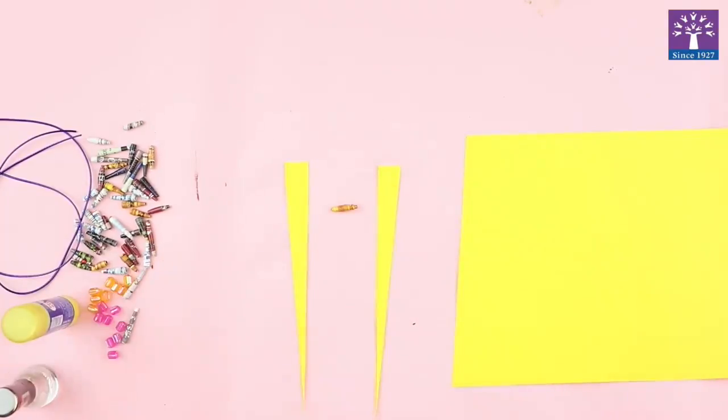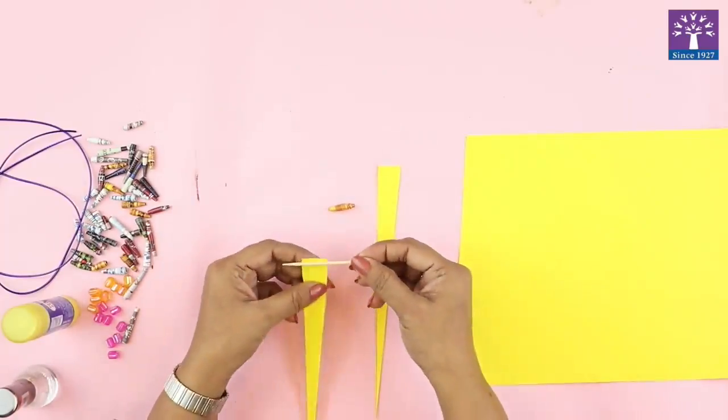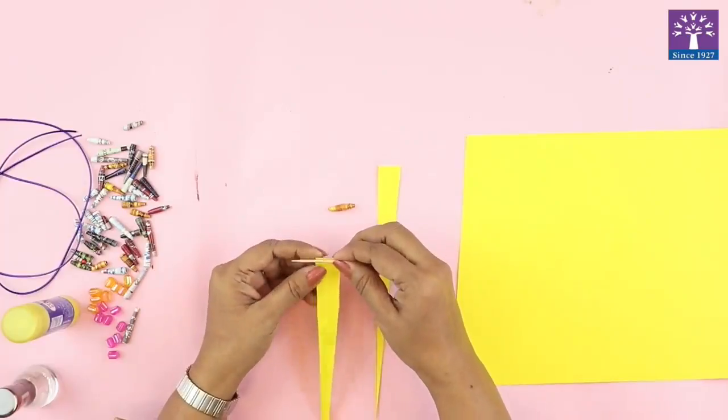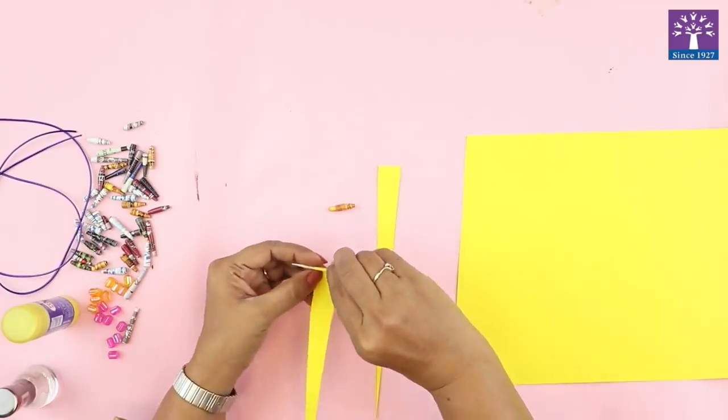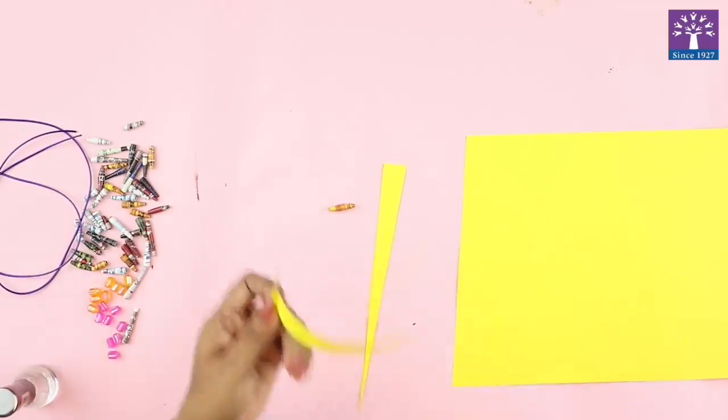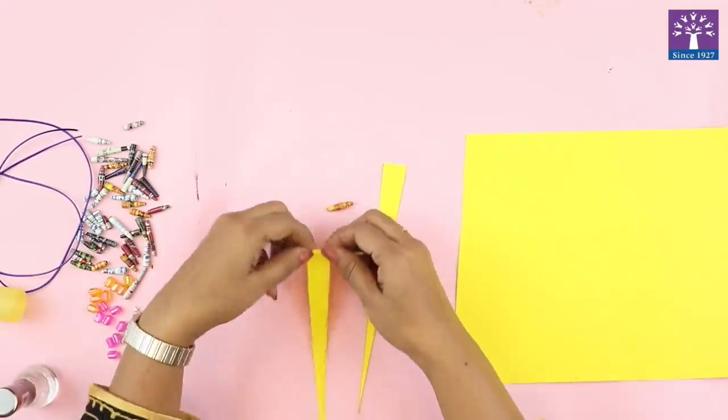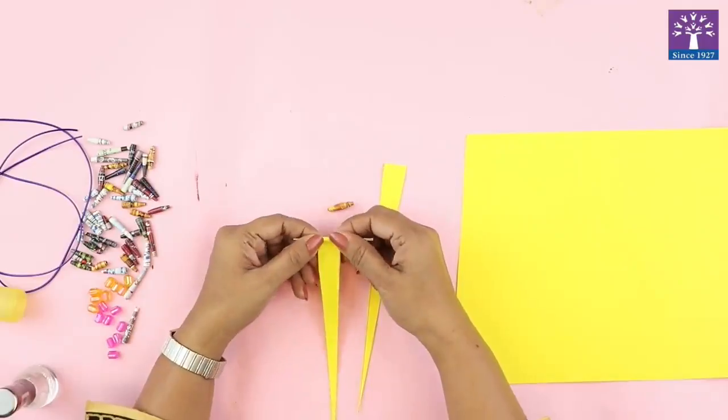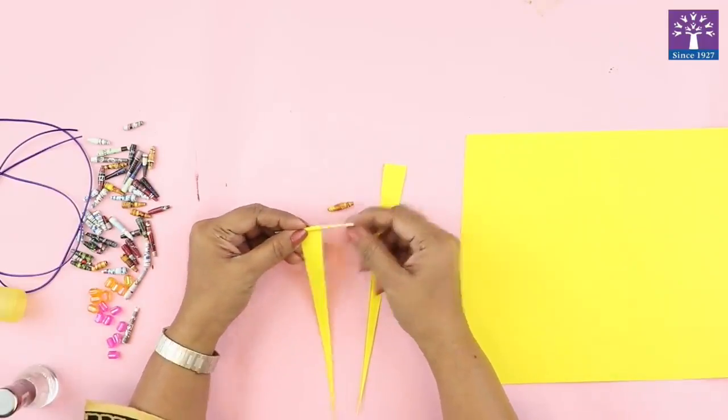Now we will use a toothpick and we will start rolling the paper. We will apply some glue. See that you have the center.